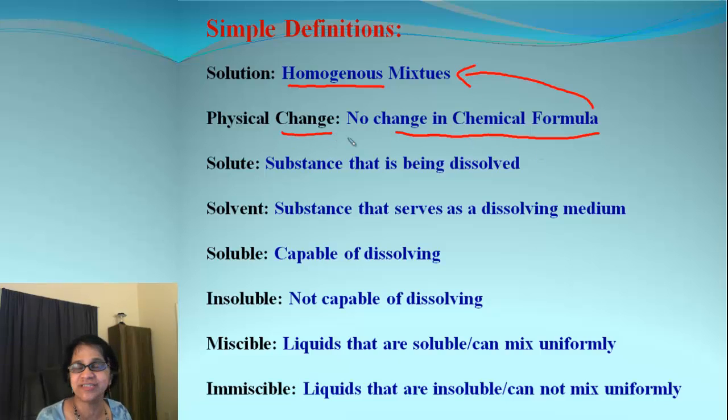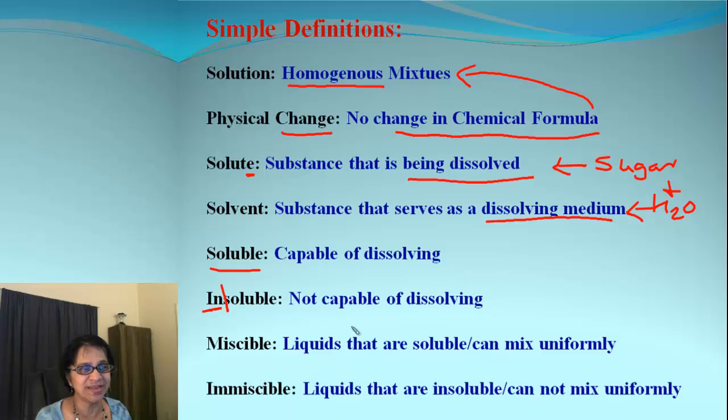Solute and solvent: something which is being dissolved is called a solute, and something which serves as dissolving medium will be called as solvent. So let's say we are dissolving sugar in water. Then sugar is the one which gets dissolved so it's the solute, and we have water which acts as a medium, so that will be called the solvent.